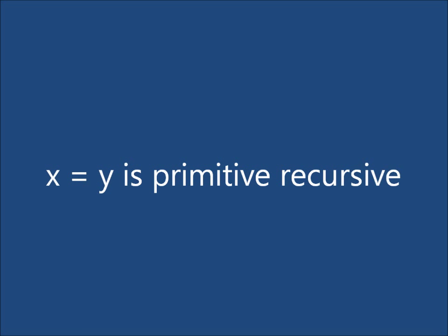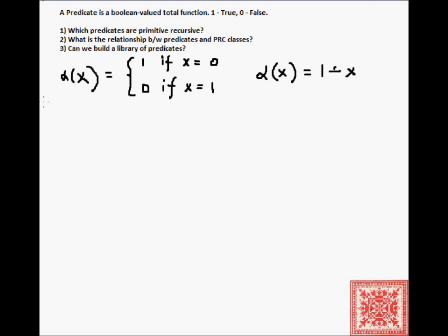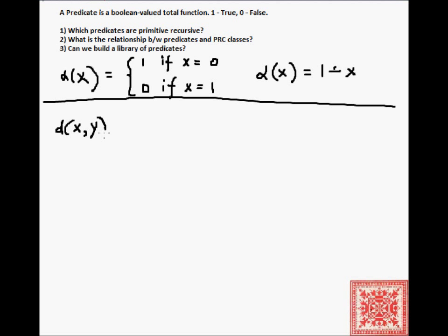Let's prove that x equals y is primitive recursive — that is, testing two natural numbers for equality is primitive recursive. Let's define the function d(x, y), where d(x, y) is equal to 1 if x equals y, and 0 if x is not equal to y.